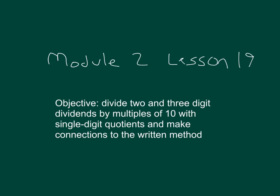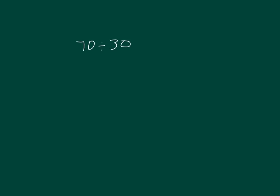Here we're dividing two and three-digit dividends by multiples of 10 with single-digit quotients, and we'll make a connection to the written method. What's the divisor here? Right, the divisor is 30. We need a multiple of 30 to make the division easy.